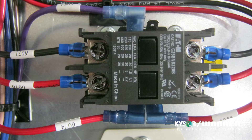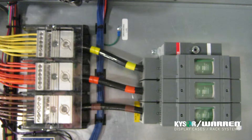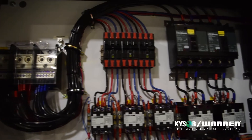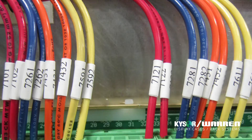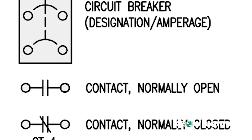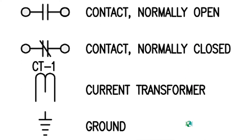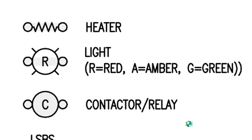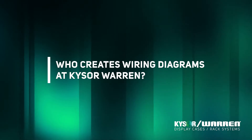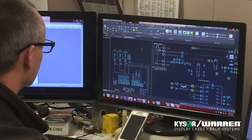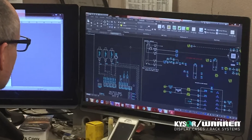A typical wiring diagram shows the actual point-to-point connections of all the system components, including the color of the interconnected wiring. Each of the components is represented using generally accepted universal symbols. Who creates wiring diagrams at Kaiser Warren?